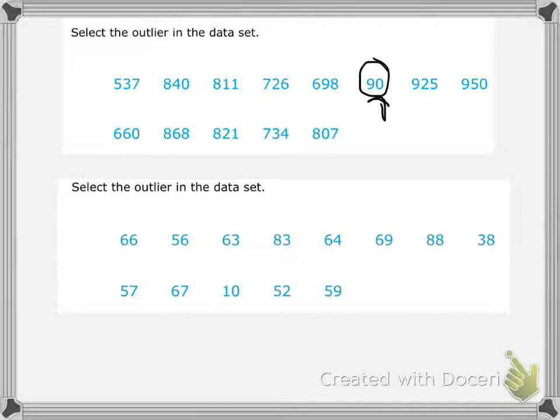Then let's go to the bottom one here. We have all these numbers that are in the 60s, 50s. There's an 88 in there. And then we have this value that is 10, that is far away from the 50s, 60s, 70s, and 80s. So 10 is our outlier.